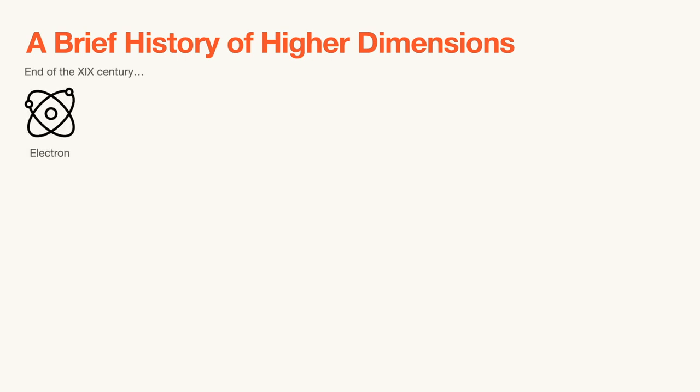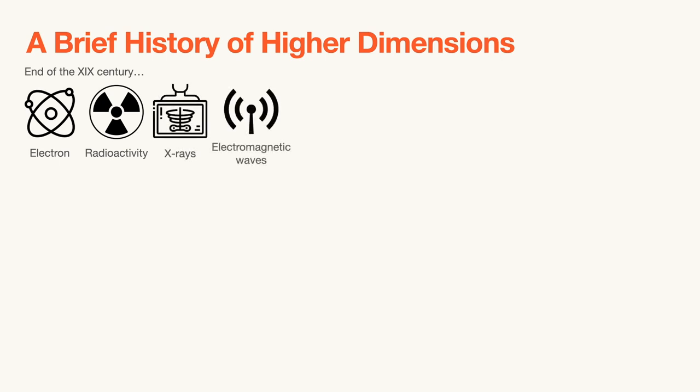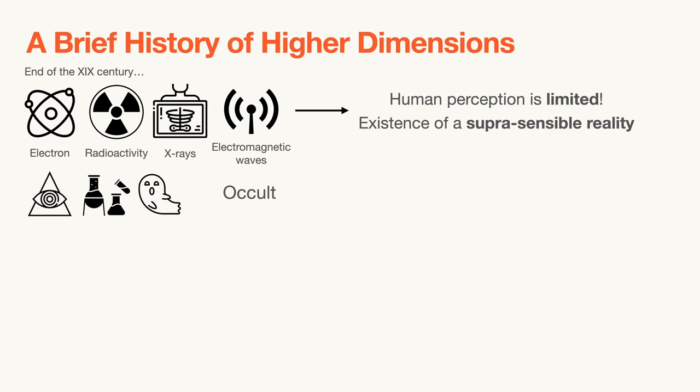The late 19th century saw incredible scientific innovations, such as the identification of the electron, the studies on radioactivity, electromagnetic waves, and x-rays. These discoveries made us realize that human perception is limited, and that some super-sensible reality that we cannot see or touch might actually exist. This occasionally allowed science and supernatural theories to intersect with practices such as alchemy and, I'm not joking, spirit photography.